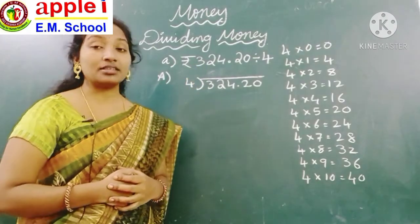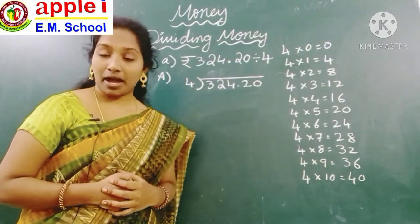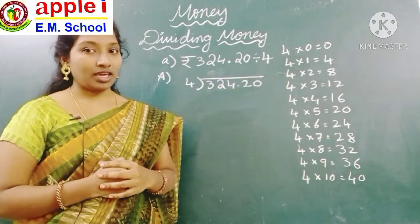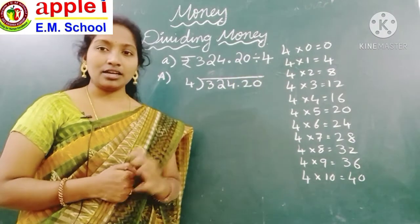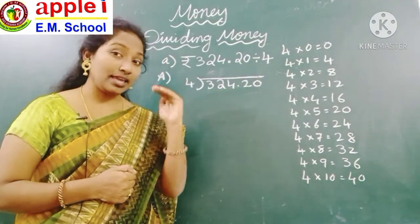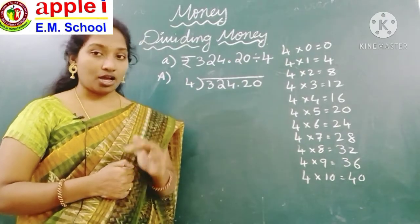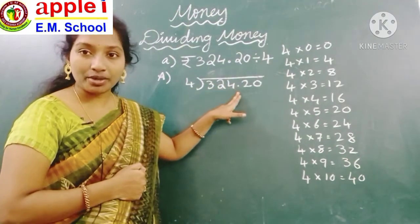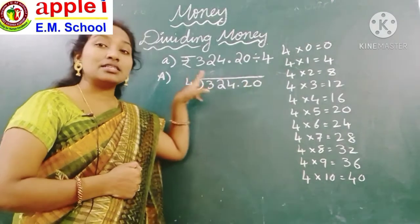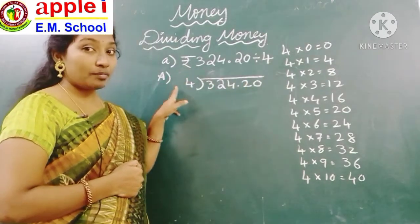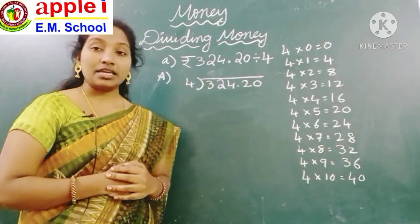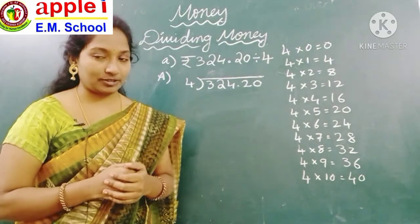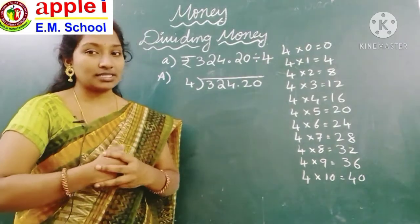324 rupees 25 paise divided by 4. Here you have to do it like normal division. See, 324 rupees 25 paise divided by 4. In division we follow some steps, and here also you have to follow those steps.